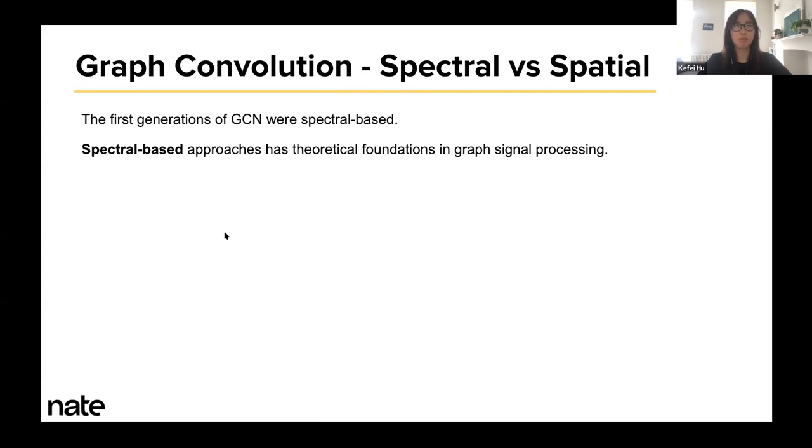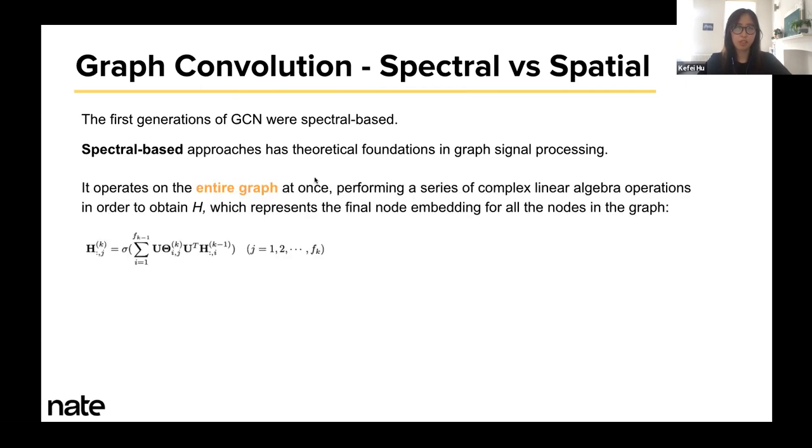To understand the difference between spectral and spatial graph convolution, the first generations of graph convolution were spectral-based and they have a theoretical foundation in graph signal processing. It treats the operation as removing noises from the graph signals, that is, the node features. It operates on the entire graph all at once, followed by a series of really complex linear algebra operations in order to obtain H. H is a matrix that represents the final node embedding for all the nodes in this graph.